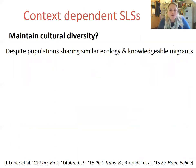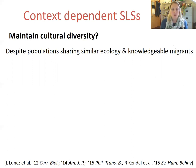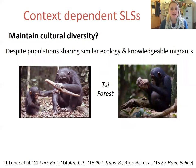Taken as a whole, you can see how the variety of context-dependent social learning strategies I've mentioned could have implications for cultural patterns. When acting simultaneously, these social learning strategies may explain the surprising maintenance of cultural diversity between neighbouring populations of animals, including humans, despite these populations sharing a similar ecology and the existence of frequent migrations between them. A nice example is work by Lydia Luntz et al. on cultural differences in hammer choice to crack cooler nuts in three neighbouring communities of wild chimpanzees in the Tai forest on the Ivory Coast.